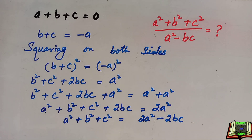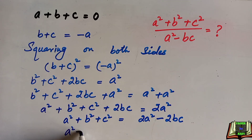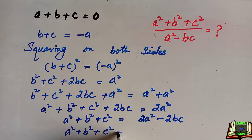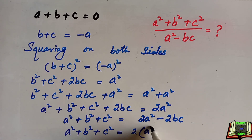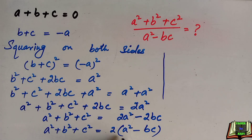Since 2bc was adding on the left, it will be subtracted on the right. In the next step, keeping a² plus b² plus c² as it is on the left hand side, on the right hand side we take 2 as common, and in the parenthesis we get a² minus bc.